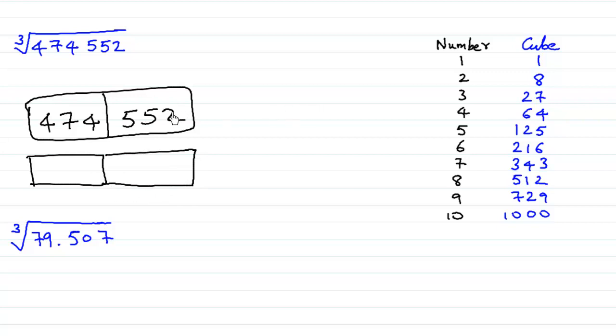Now look at the units place of this number. The last digit is 2. Where do we find 2 in the end? Here we have a 2 in the units place, 512. What is written opposite to that? 8 is written. So 8 is the units place of our answer.